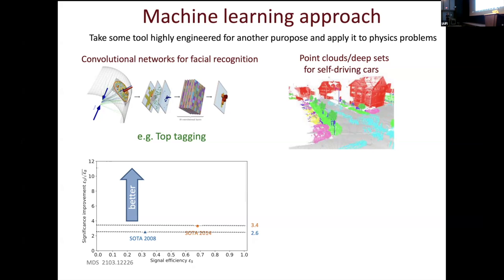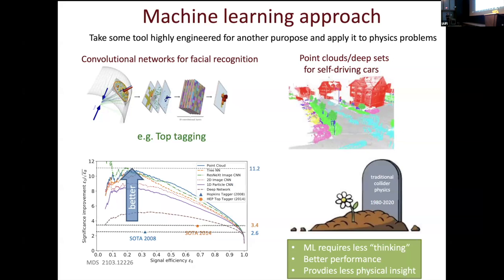Top tagging is trying to find certain types of particles — jets — in the collider at the LHC and discriminate whether it's a top quark or not. This is something very close to my heart, something I've worked on for 15 years. My first collider physics project was in 2008, where we could get a certain signal efficiency. This axis is significance improvement — signal efficiency divided by square root of background efficiency. That was pretty good at the time, almost revolutionary, and it started the whole area of jet substructure. Six years later, they improved it by a lot — going from 2.6 to 3.4 — and then the machine learning revolution totally destroyed these benchmarks.